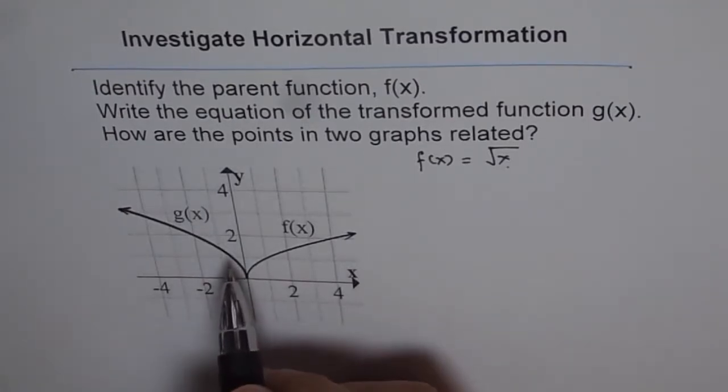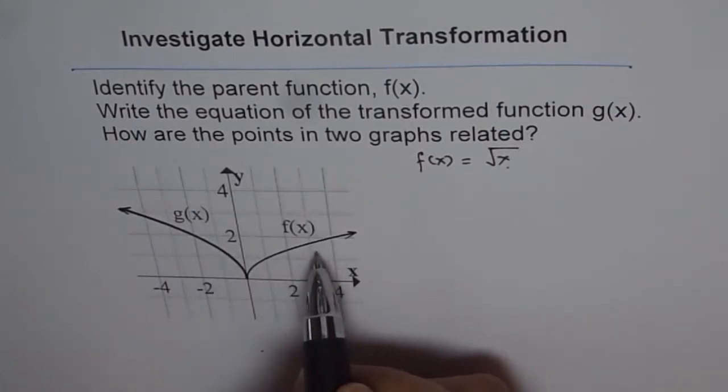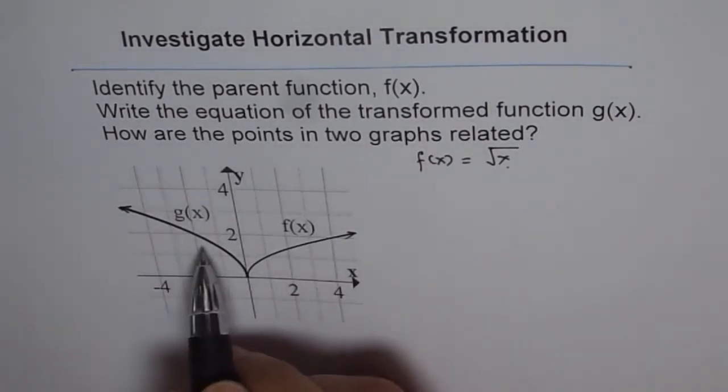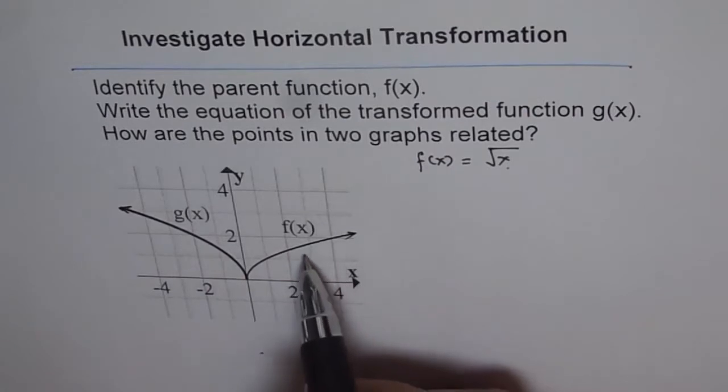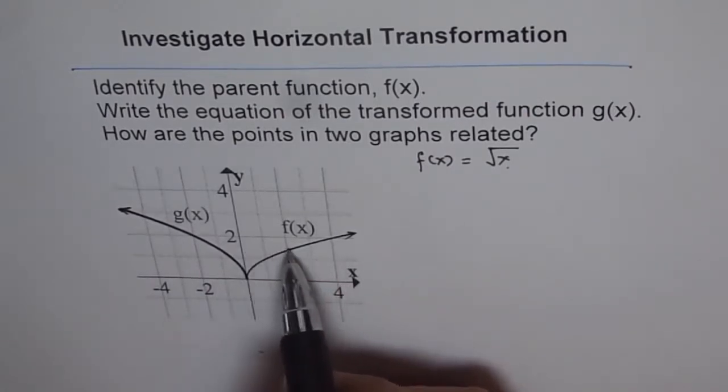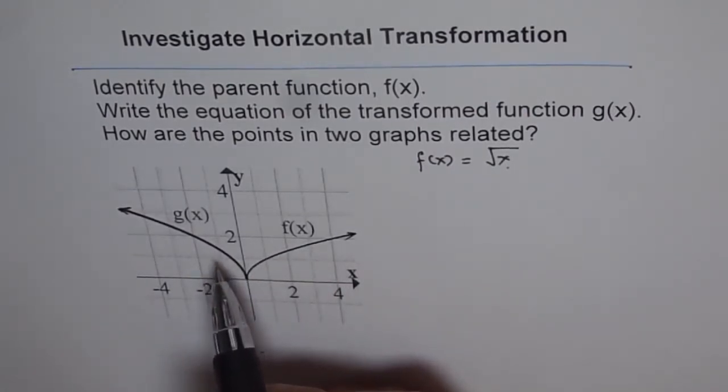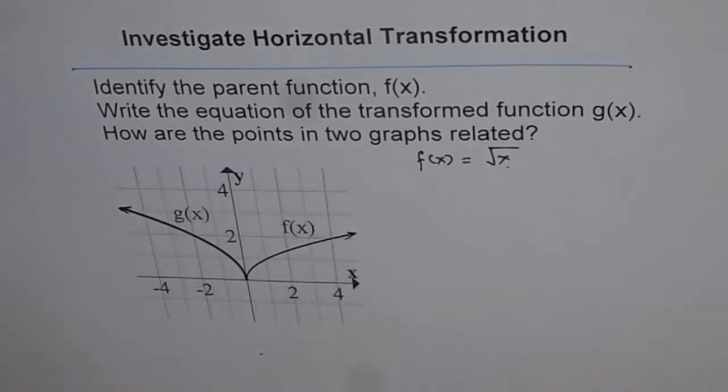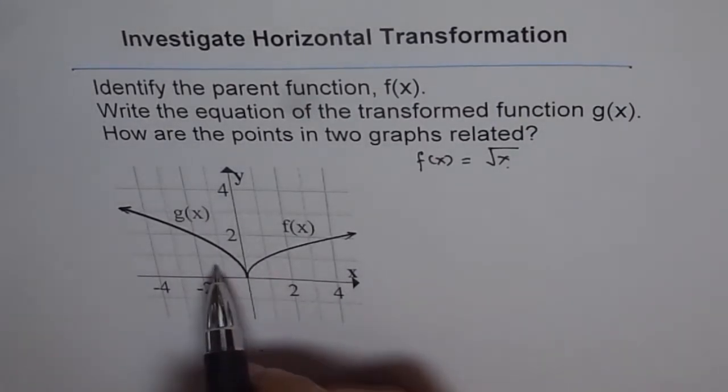Second, we also see that it is kind of compressed horizontally. So it is kind of lifted up, as if somebody has pushed it inside. So there are two transformations taking place here. One is there is a reflection, and second, there is a horizontal compression. So both the things are happening. Let's try to analyze these two.